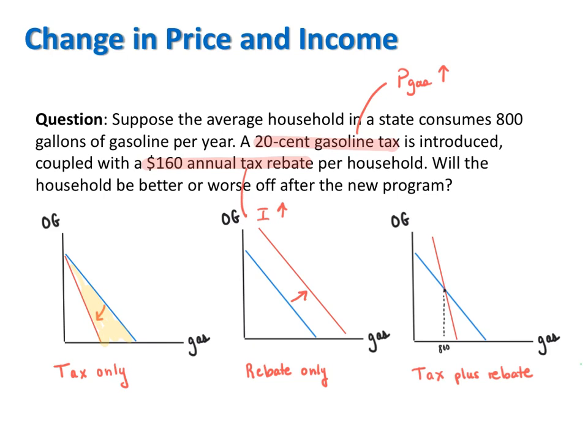At the same time, when we consider only the rebate, we know that a rebate by increasing income will expand the consumer's budget set, unambiguously making the consumer better off. When gas is a normal good, the rebate will increase consumption of gas because the consumer will feel richer and therefore buy more normal goods.